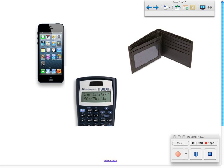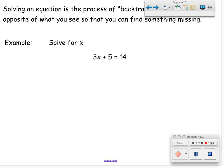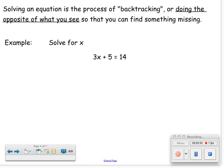So that's all an equation is. An equation is basically when you have two sides balanced. And solving an equation is the process of backtracking, like with the phone or the wallet. In other words, you are doing the opposite of what you see so that you can find something missing.